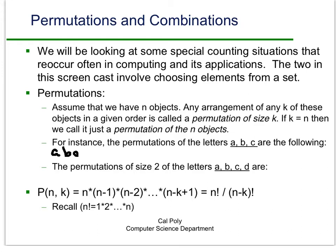we can get a, b, c. We can get a, c, b. We can get b, a, c. We can get b, c, a. We get c, a, b. And c, b, a.